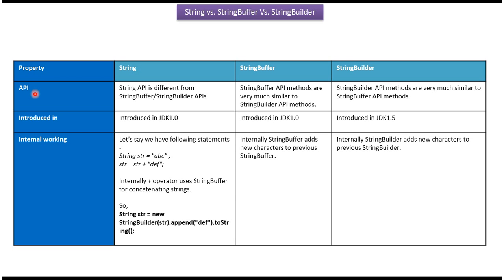Property is API. String API is different from string buffer and string builder APIs. String buffer API methods are very much similar to string builder API methods, and string builder API methods are very much similar to string buffer API methods.